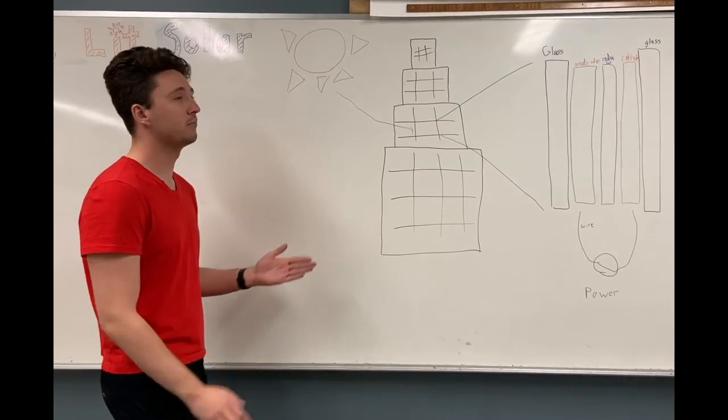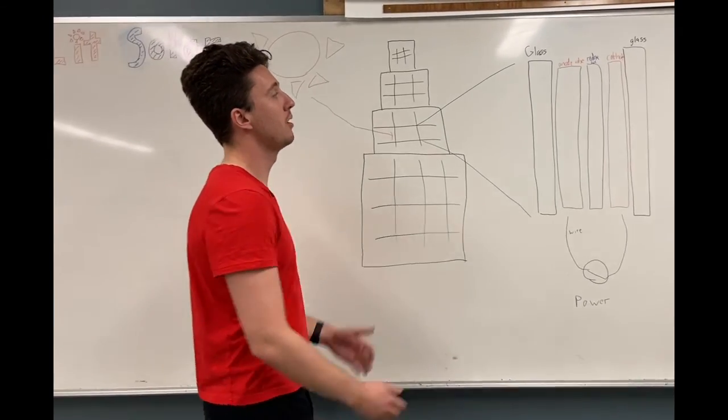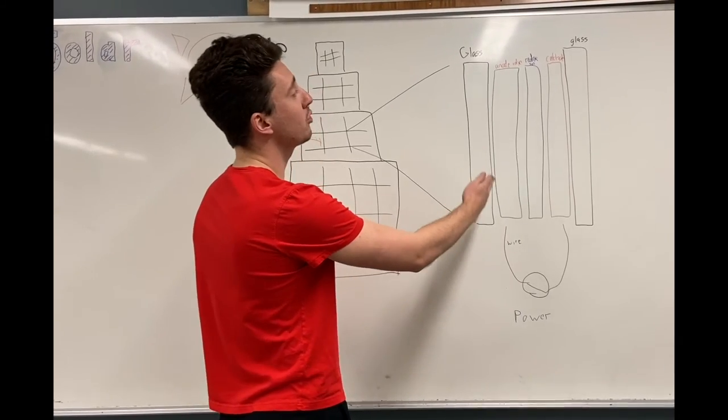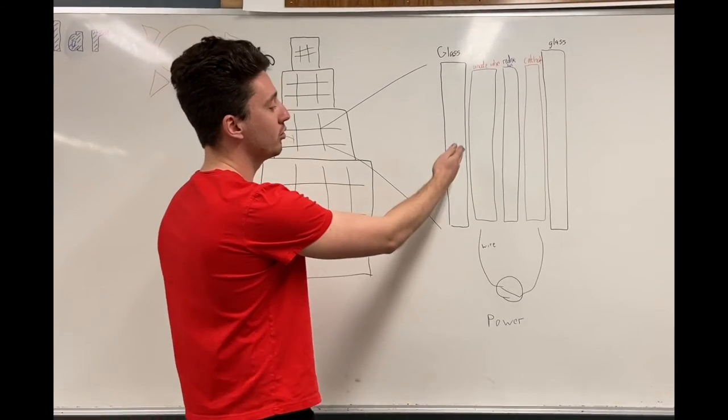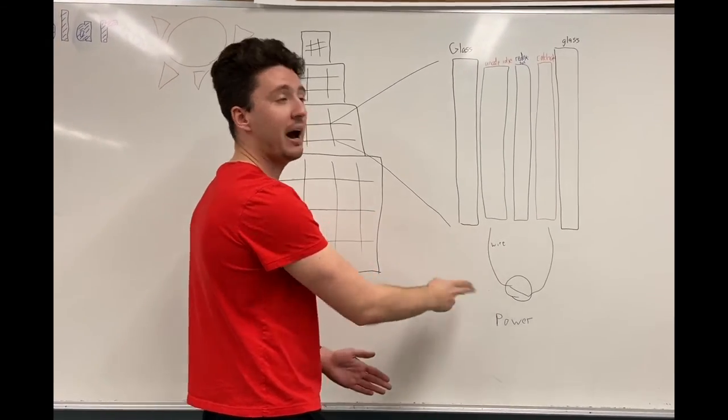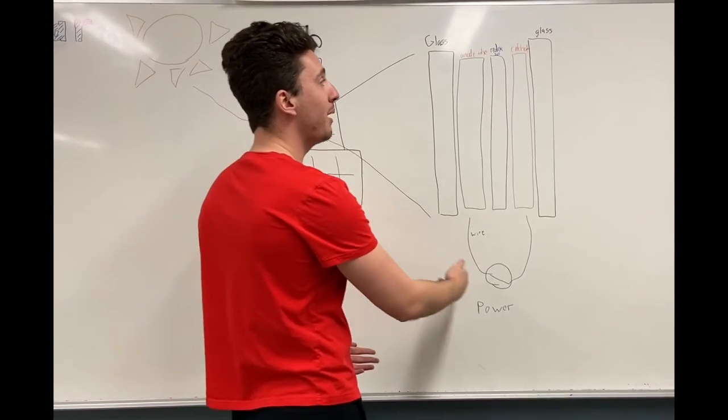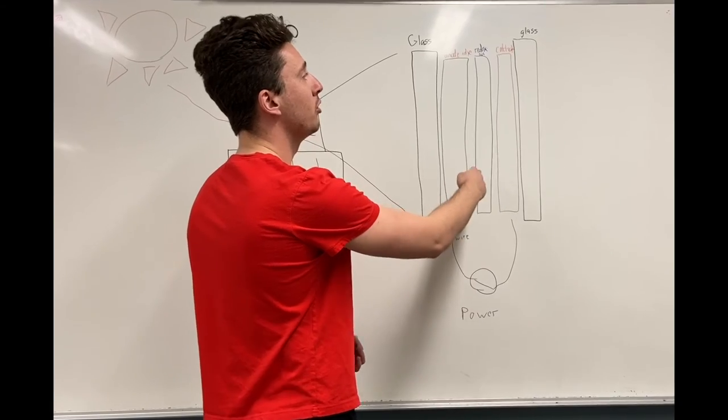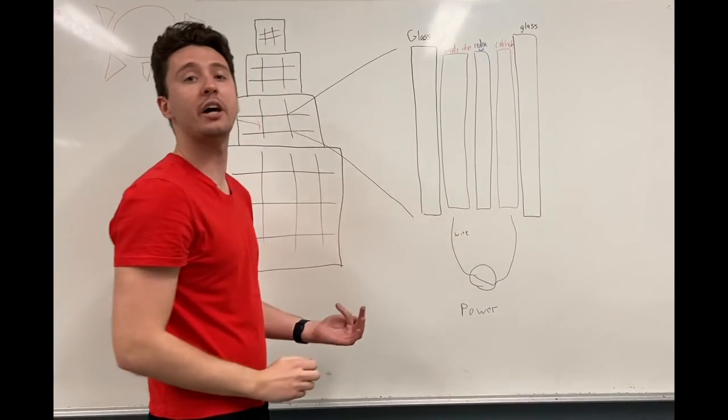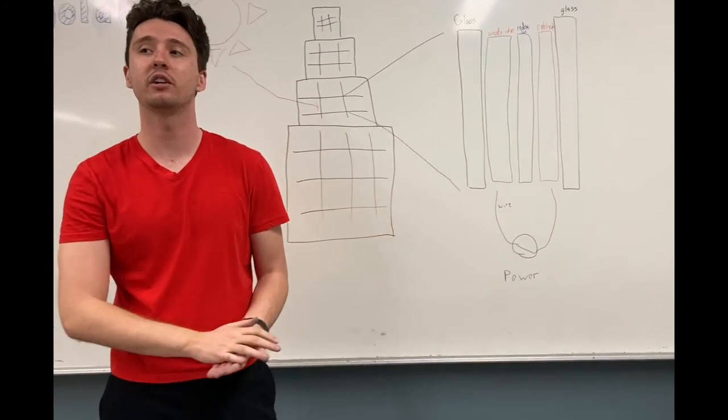Now, how do ours work? The sun comes in, it hits our dye, it excites those electrons, it goes to anode, travels through the wire, it powers your computer, powers your AC, powers your lights, it comes back through the cathode, goes through the redox solution, back into the dye, so that way you can begin that cycle again.